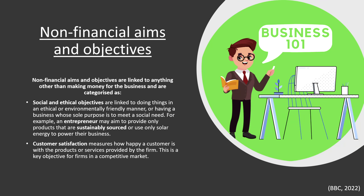Non-financial aims and objectives are linked to anything other than making money for the business. They are categorized as: social and ethical objectives, which are linked to doing things in an ethical or environmentally friendly manner, or having a business whose sole purpose is to meet a social need — for example, an entrepreneur may aim to provide only sustainably sourced products or use only solar energy to power the business. The second category is customer satisfaction, which measures how happy a customer is with the products or services provided by the firm. This is a key objective for firms in a competitive market.